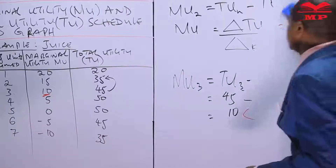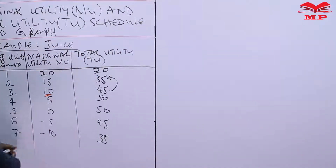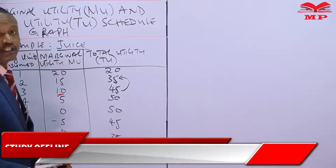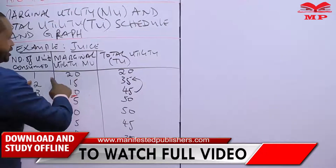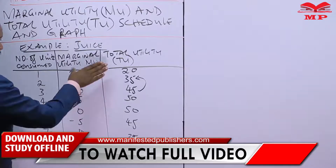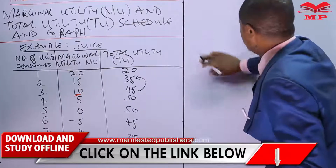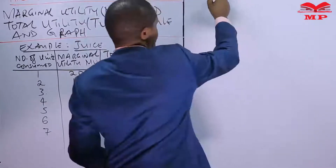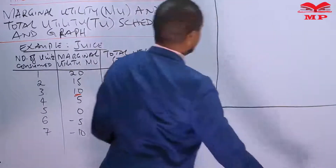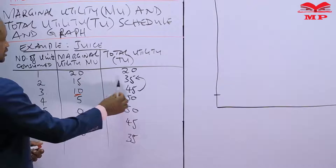We now proceed with our schedule. This is an example of the marginal utility and total utility schedule — simply a tabular presentation of quantities consumed with their respective marginal utilities and total utilities. We can use this data to draw a graph — a diagrammatic presentation.